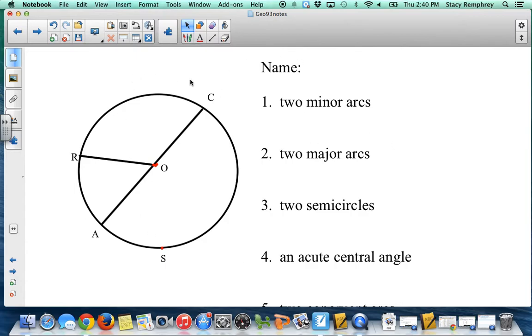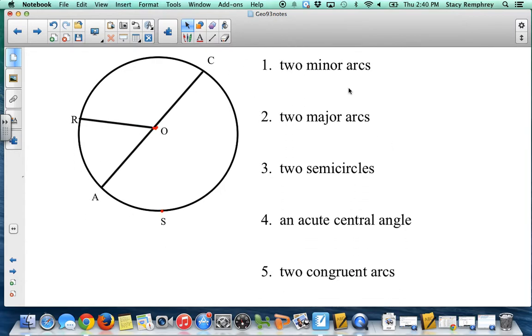Okay, so in this first one, I have a circle. I have circle O. And what we're going to do is just apply the vocabulary. So using this, I'd like you to try and write an example of two minors, two majors, and so on.